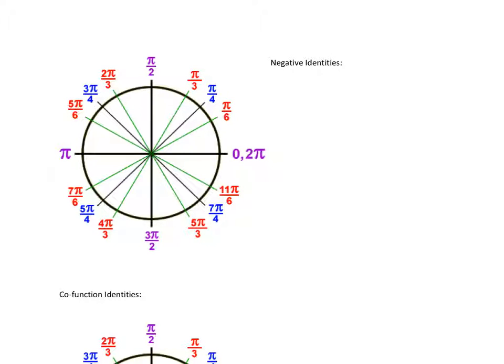More trig identities are called negative identities. So if you have, for example, the sine of pi over 6. Right here in this triangle, what is the y value for sine of pi over 6? Well, the y value is just 1 half.